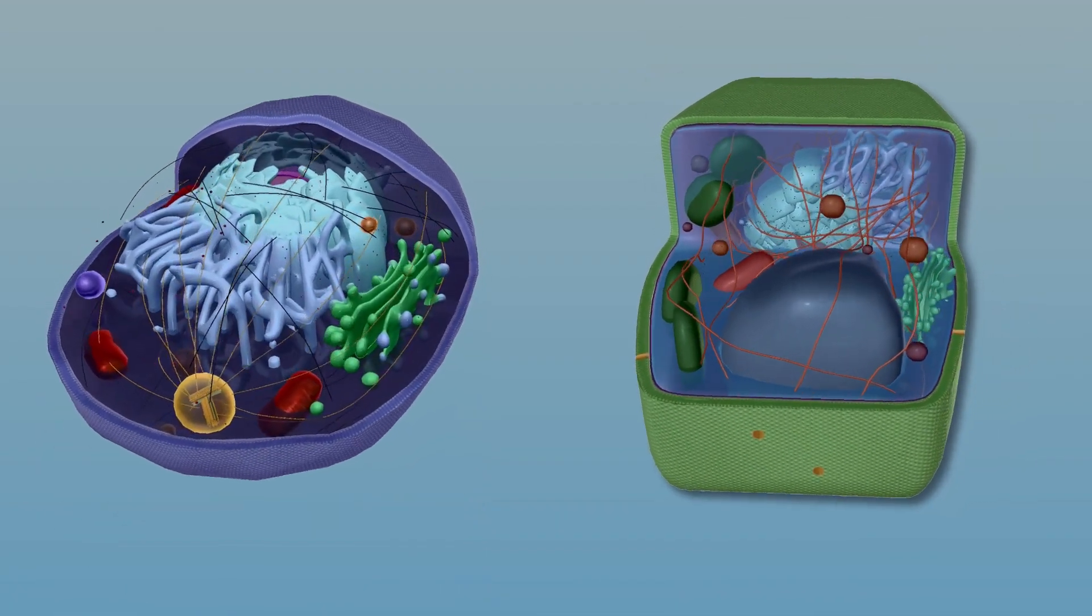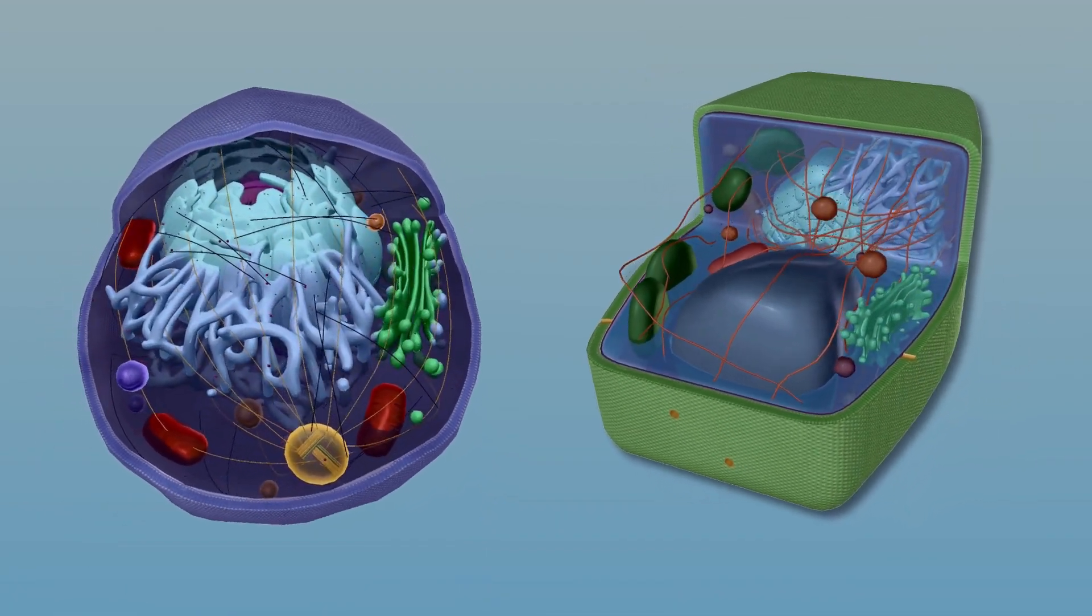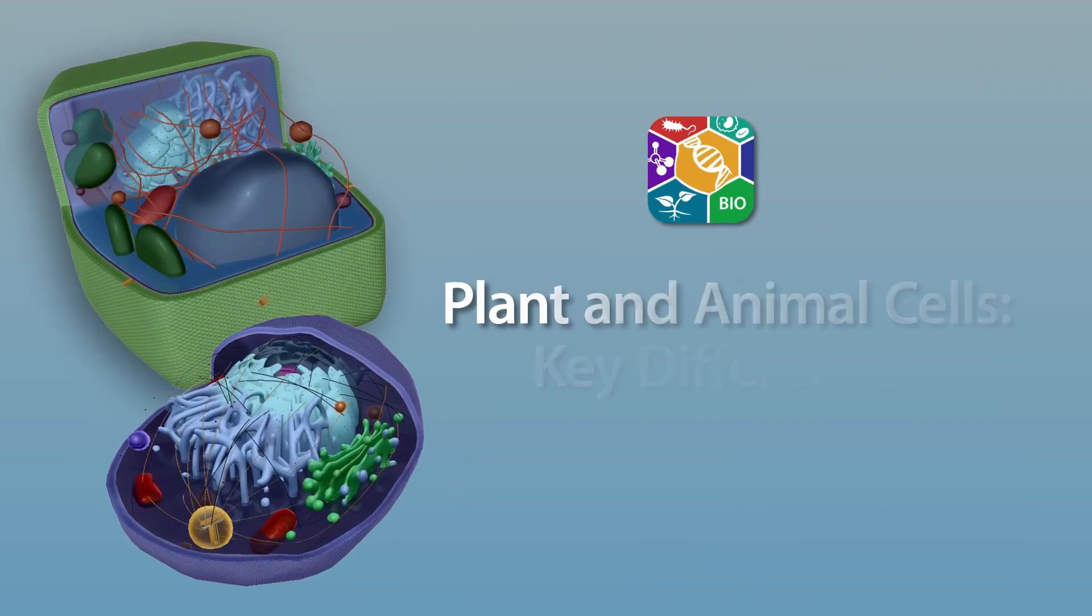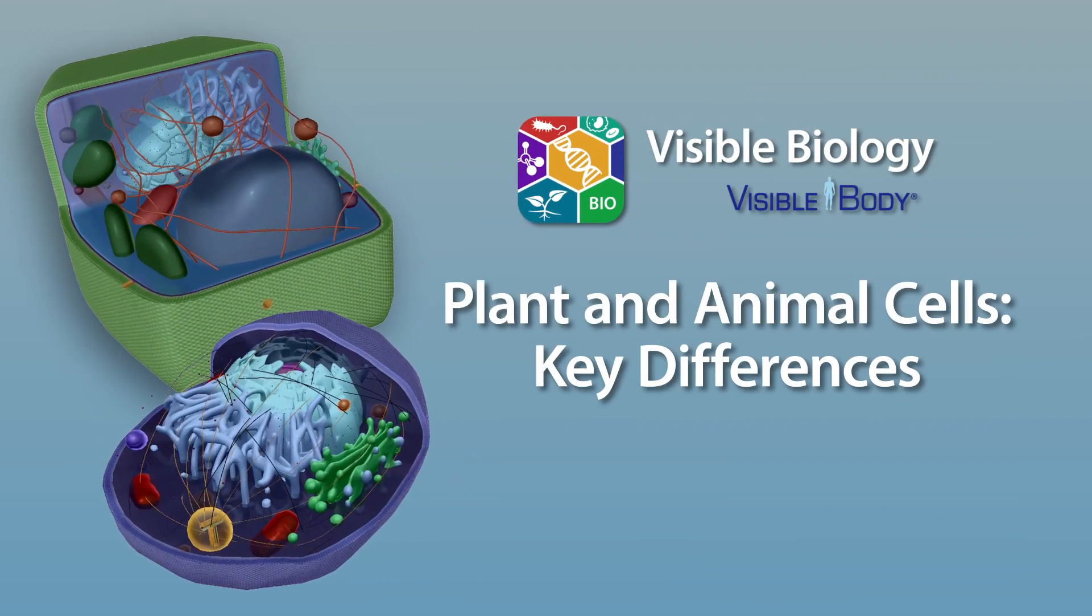Animal and plant cells are both types of eukaryotic cells, which means they have a lot in common. But there are a number of structures unique to each type of cell.